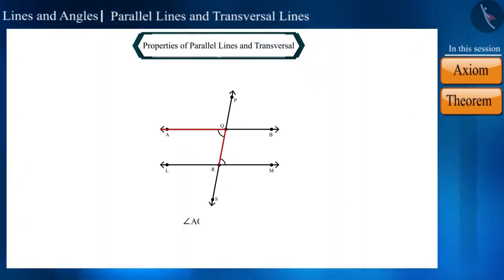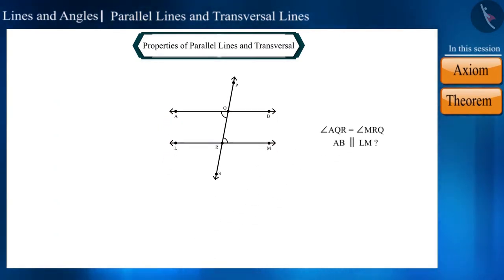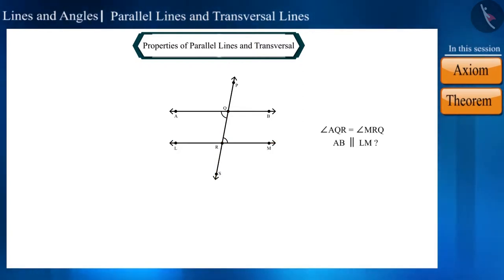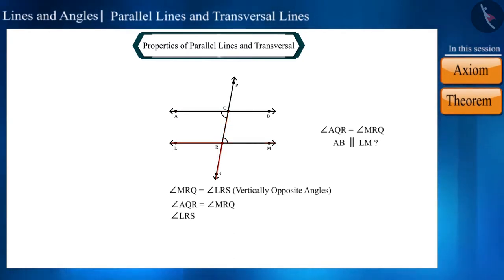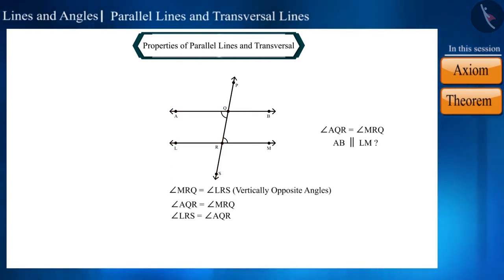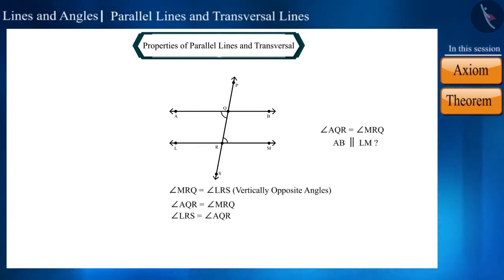Can we call two lines parallel if the alternate interior angles are equal? Let's look at the figure. Both these angles are vertically opposite angles, therefore angle MRQ and angle LRS will be equal. We have been given that these two angles are equal. From these two statements we can draw the conclusion that both these angles are equal. Kindly note these two angles are corresponding angles.